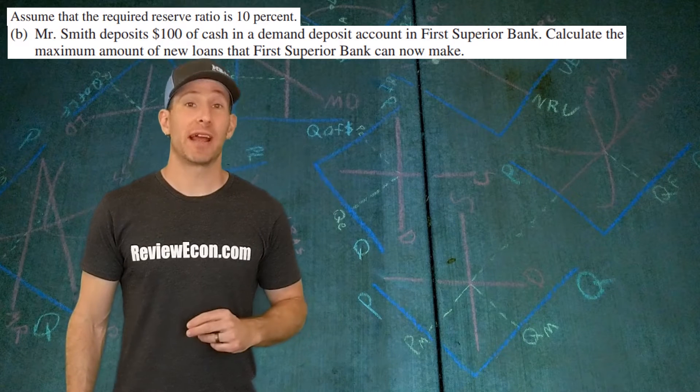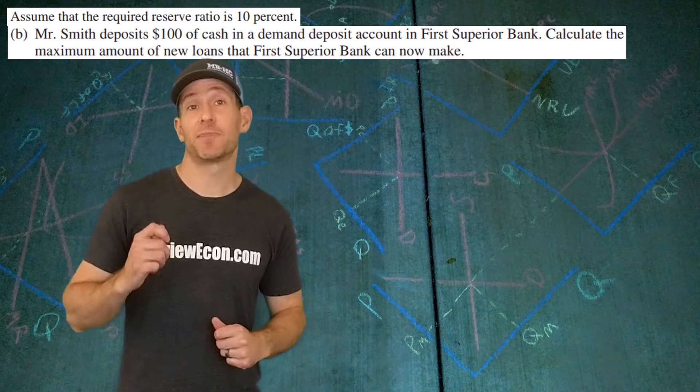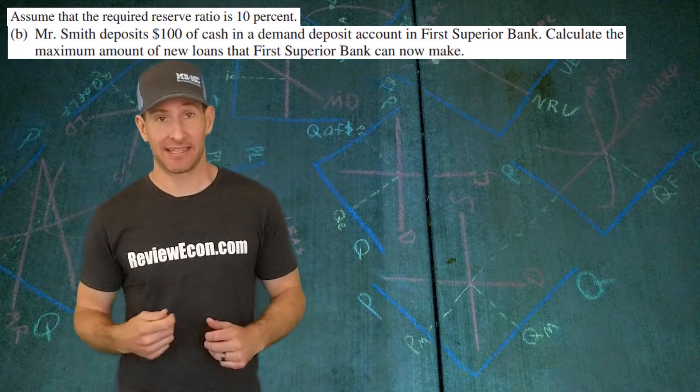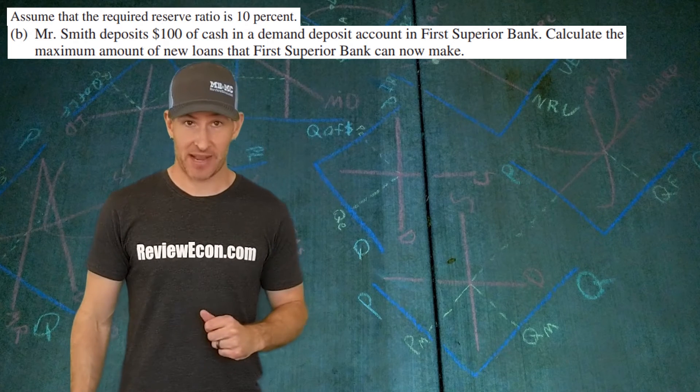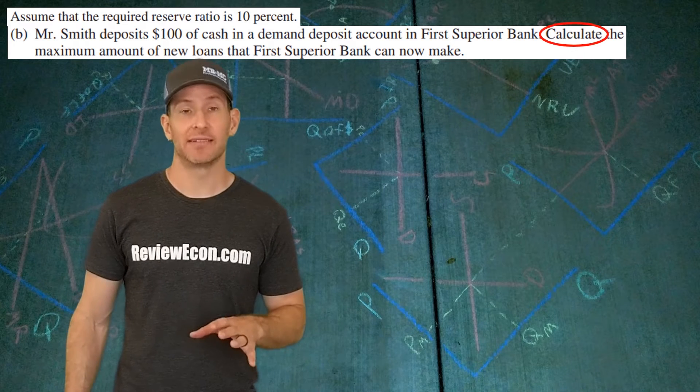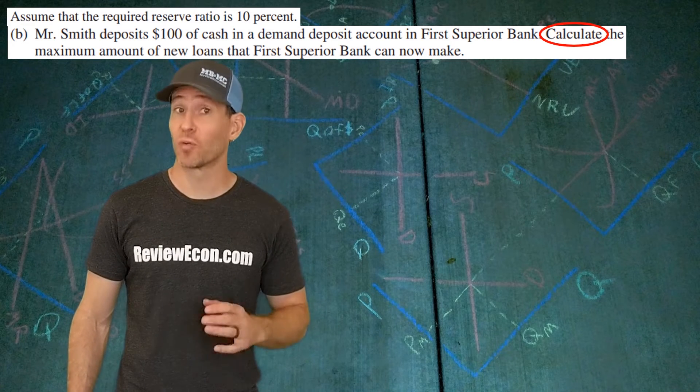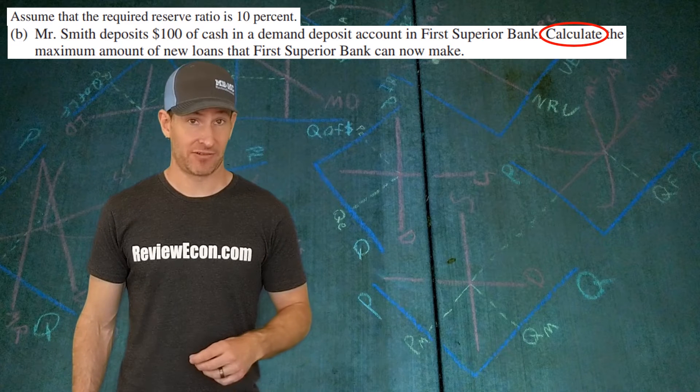For part B, we have Mr. Smith. Mr. Smith takes $100 out of his pocket, cash, and he puts that into his checking account as a deposit in First Superior Bank. Now, based on this deposit, we must calculate—calculate means show your work—the amount of loans First Superior Bank can make out. Here, we're looking at just the amount of loans this single bank can loan out.